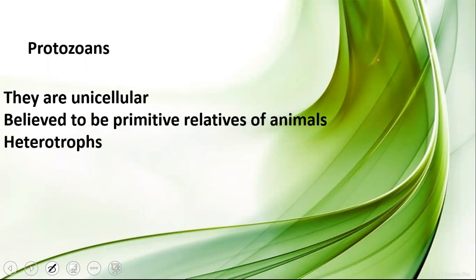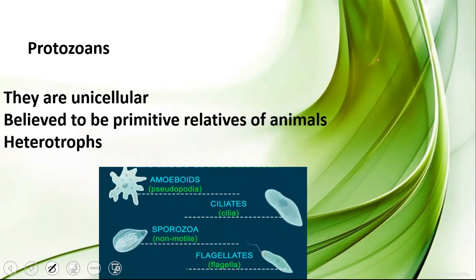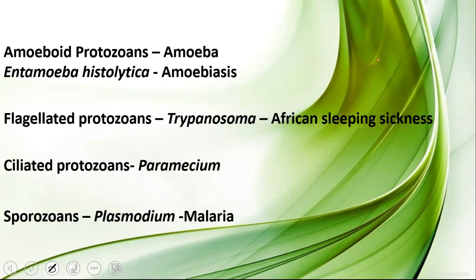Protozoans are unicellular and believed to be primitive relatives of animals, showing characteristics related to animals. They are basically heterotrophs. Types include amoeboids, ciliates, sporozoans, and flagellated protozoans. Amoeboid protozoans include Amoeba; in humans, Entamoeba histolytica lives in the intestine and causes the disease amoebiasis.